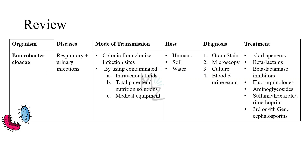Quick recap: The organism discussed today is Enterobacter cloacae. It causes respiratory and urinary infections like pneumonia and UTIs. It causes disease when colonic flora colonizes infection sites, or through contaminated intravenous fluids, total parenteral nutrition solutions, and medical equipment. Hosts are humans, soil, and water. Diagnosis is based on gram staining, microscopy, culture, and blood and urine exams. Treatment includes carbapenems, beta-lactams, beta-lactamase inhibitors, fluoroquinolones, aminoglycosides, trimethoprim-sulfamethoxazole, and third and fourth generation cephalosporins.